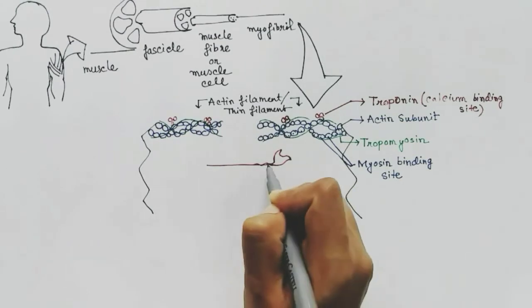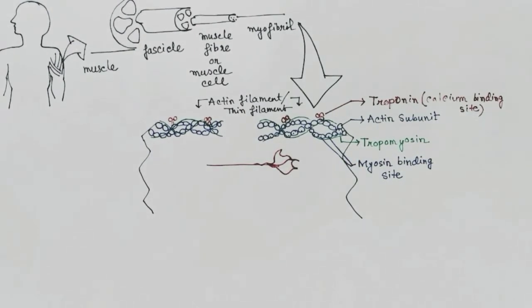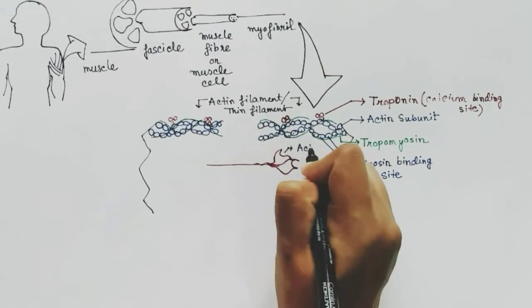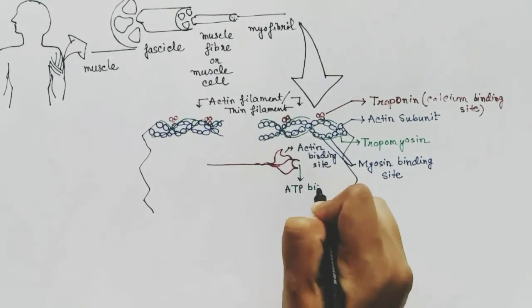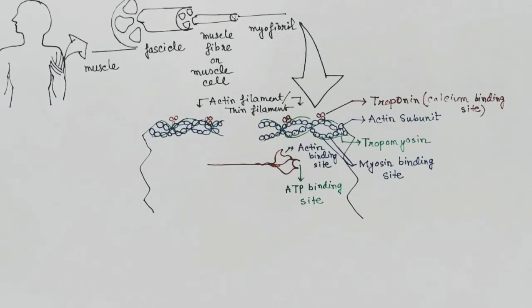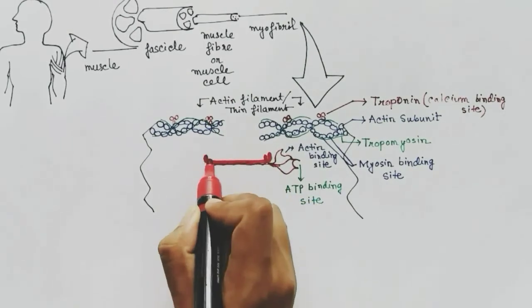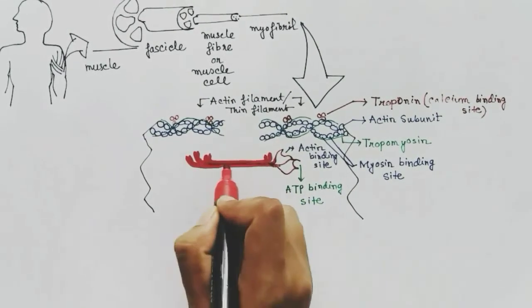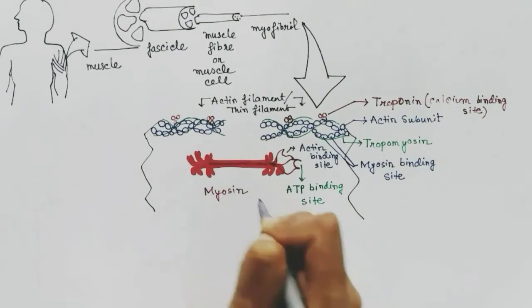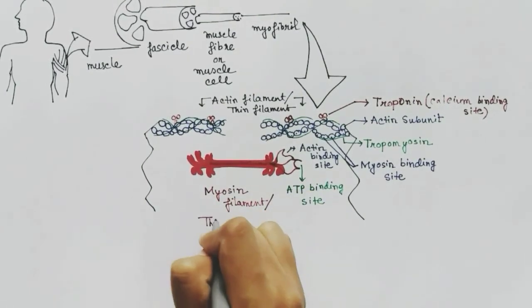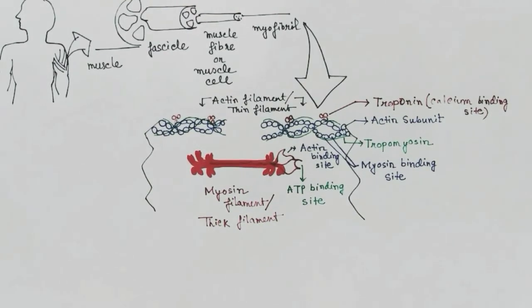This is the full structure of the actin filament or thin filament, which contains three components: actin subunits, tropomyosin, and troponin. Now, the thick filament — the myosin filament — contains two binding sites: one actin binding site and one ATP binding site. A bunch of myosin filaments are present, with the heads of the myosin popping up to make the whole thick filament. During muscle contraction, these actin binding sites bind with the actins.